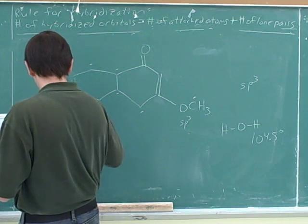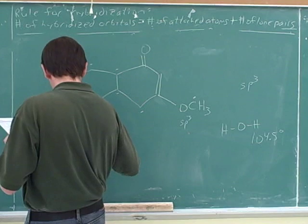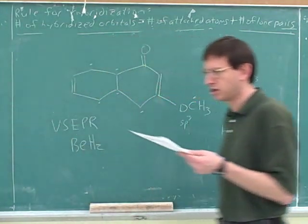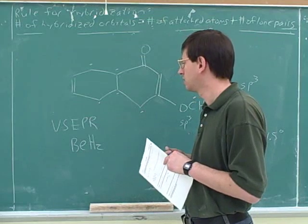Use VSEPR to deduce the shape of the molecule BeH2. Any ideas? Use VSEPR to deduce the shape of this molecule.